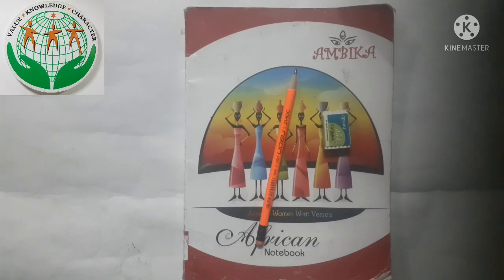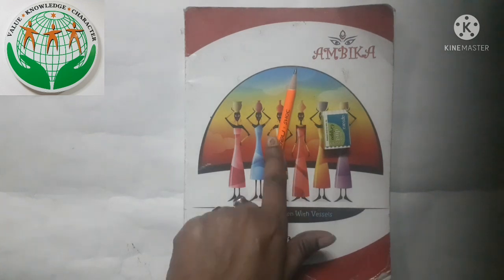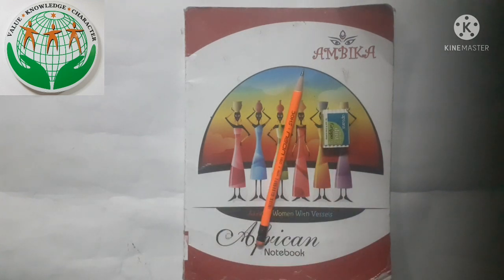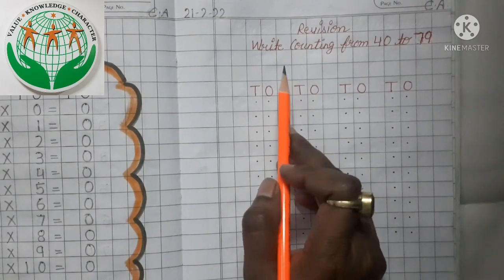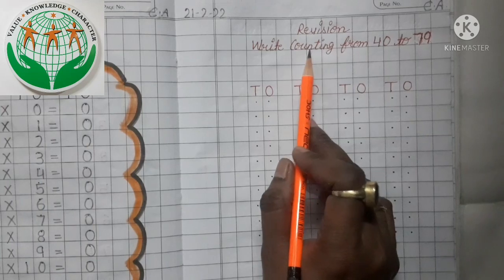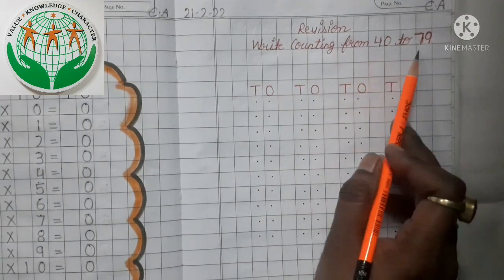Hi kids, this is your math class. In today's math class we will do our math work in the math notebook. So take out your math notebook, your pencil and your eraser and open it. In today's math class we will do counting, counting from 40 to 79.